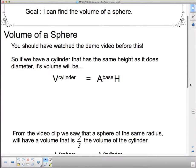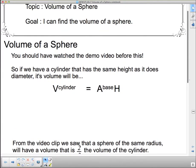So if we have a cylinder that has the same height as it does diameter, here's what its volume should be. A cylinder, the area of the base is πr², and if it has the same height as its diameter, then its height is going to be 2r, because diameter equals 2r.